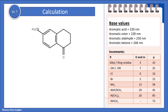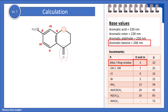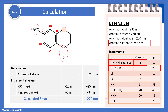Here we have an aromatic ketone group. The base value is 246 nm. We have one ring residue at the ortho position with an incremental value of 3 nm. We also have an OCH3 group, which is an OR group, at the para position with an incremental value of 25 nm. When we calculate, we get the lambda max as 274 nm.